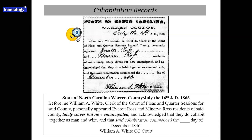Thanks to the efforts of the Freedmen's Bureau, their unions were recorded — done differently in each state and even each county. This one shows the most basic information: that they were formerly enslaved but now cohabitate together as man and wife. In North Carolina, almost all of them will give you the date of the commencement of their union. For this couple, there's no day given, but they knew it was in December of 1846 — so they had been together for almost 20 years at that point.